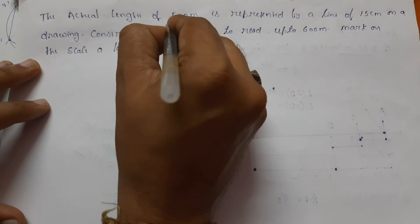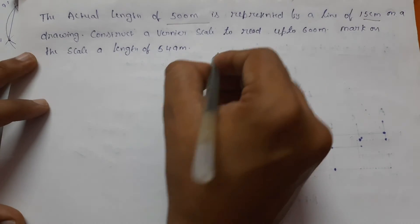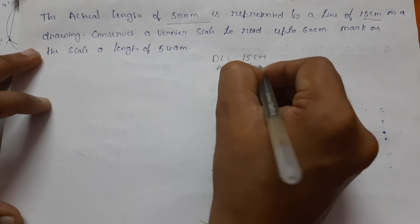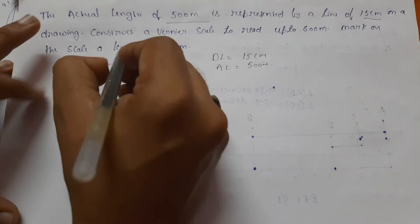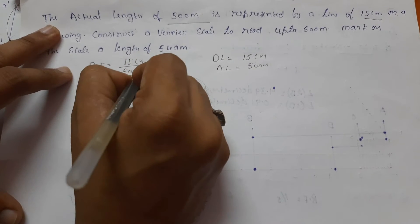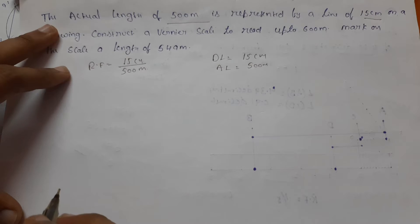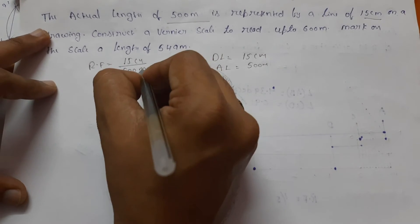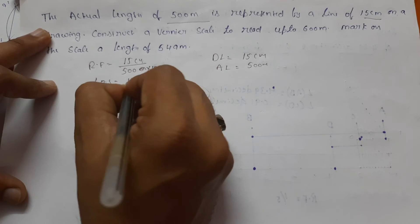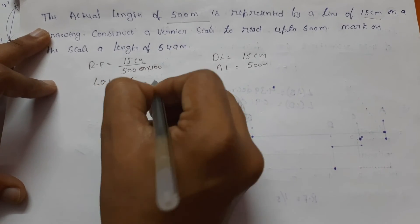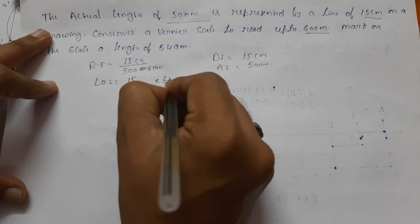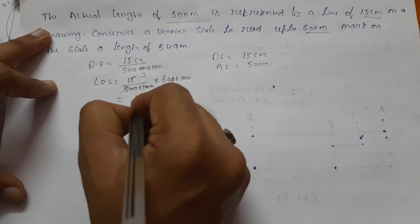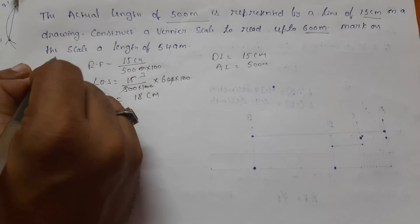The actual length of 500 meters is represented by a line of 15 centimeters. So drawing length is 15 centimeters, actual length is 500 meters, so representative factor is 15 centimeters divided by 500 meters. This is 100 centimeters, so length of scale equals 15 by 500 into 100 centimeters multiplied by 600 multiplied by 100 centimeters — the 100s cancel — giving 18 centimeters length of scale.